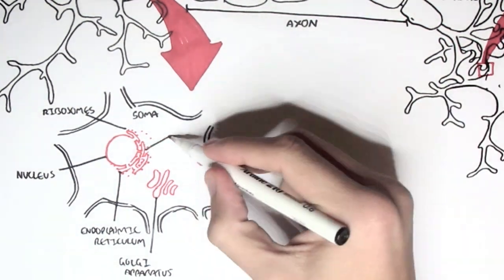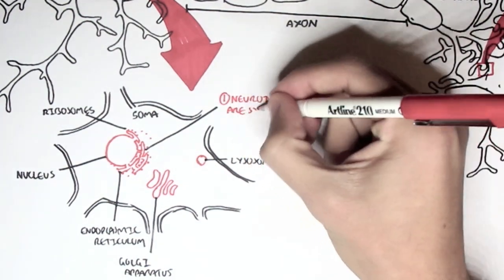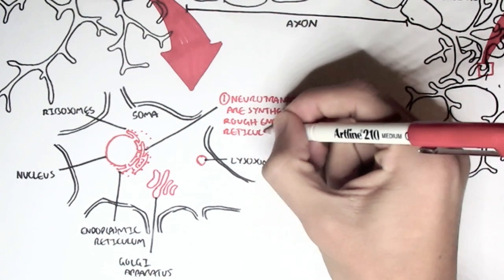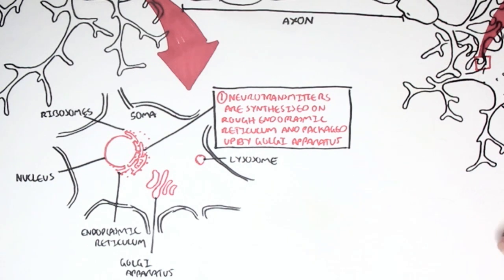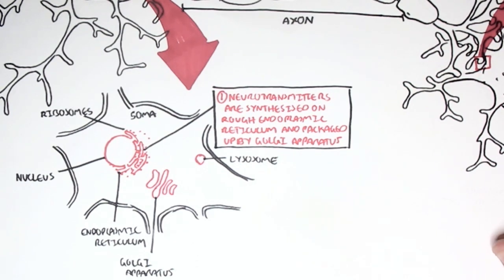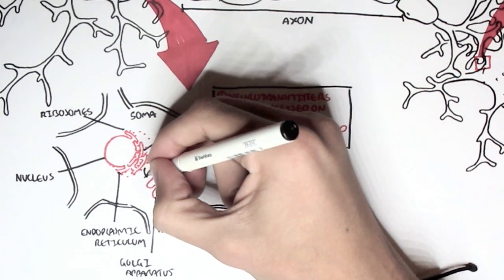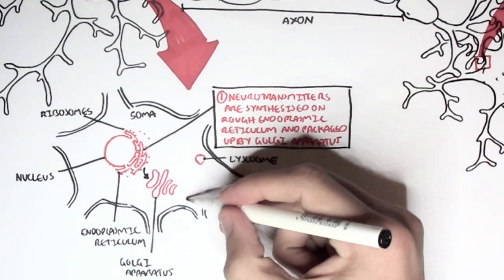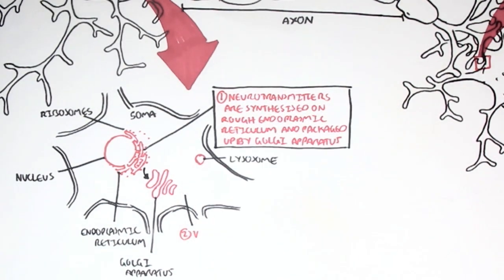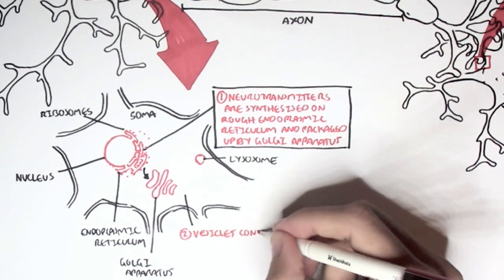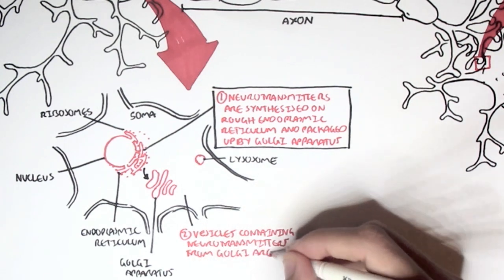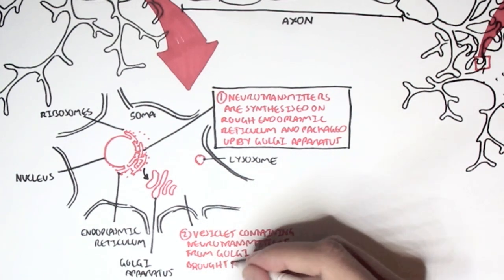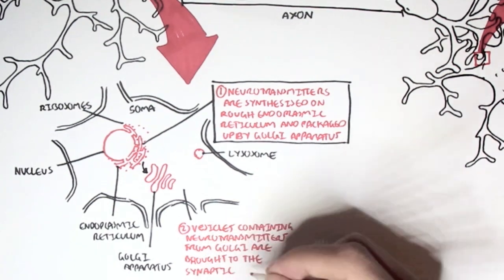Now the protein neurotransmitters are synthesized in the rough endoplasmic reticulum by ribosomes and then packaged up by the Golgi apparatus. So here we have the rough endoplasmic reticulum synthesizing new neurotransmitters that passes them onto the Golgi that will then package them up in vesicles. These vesicles containing neurotransmitters from the Golgi are then brought to the synaptic terminal.